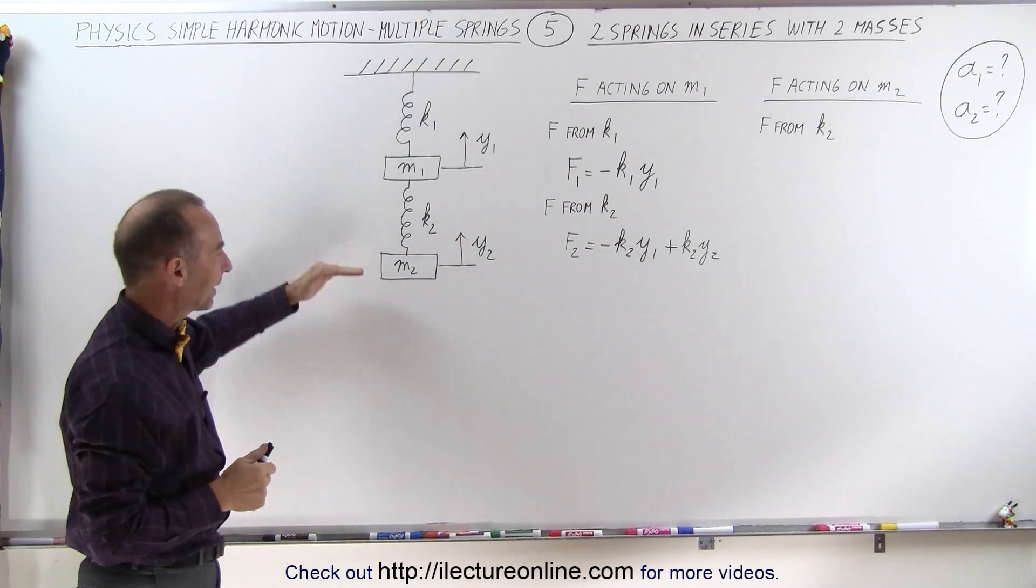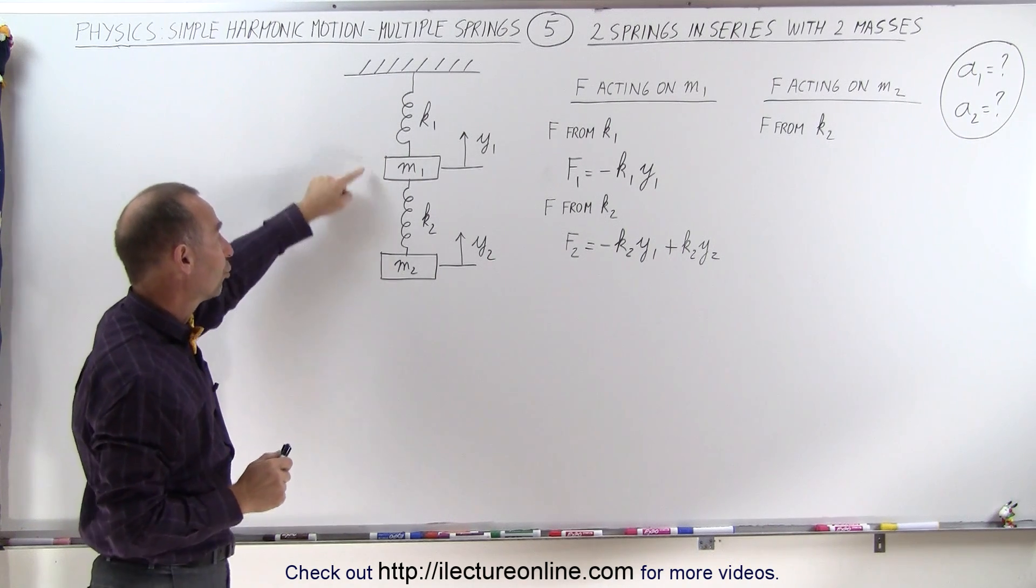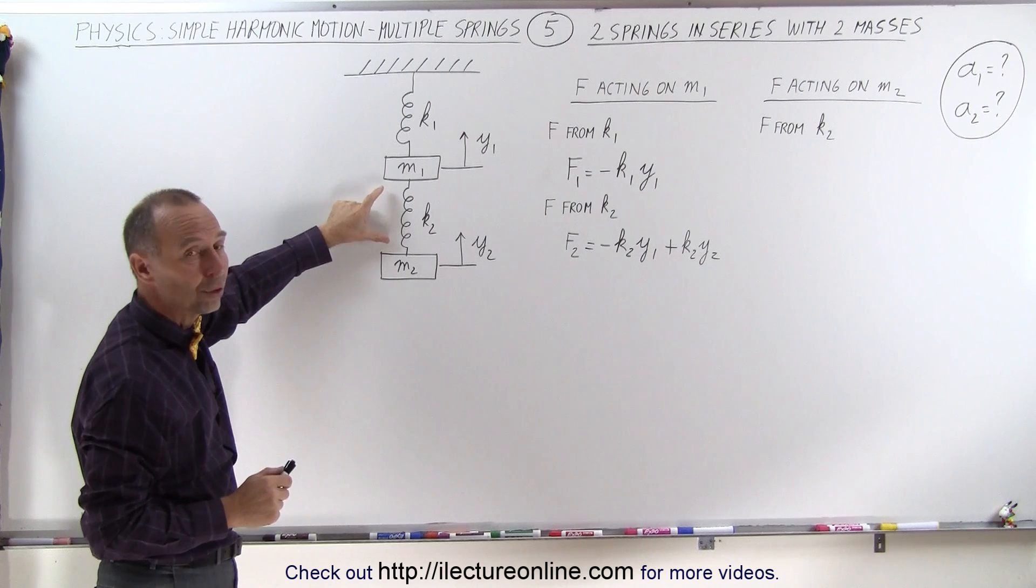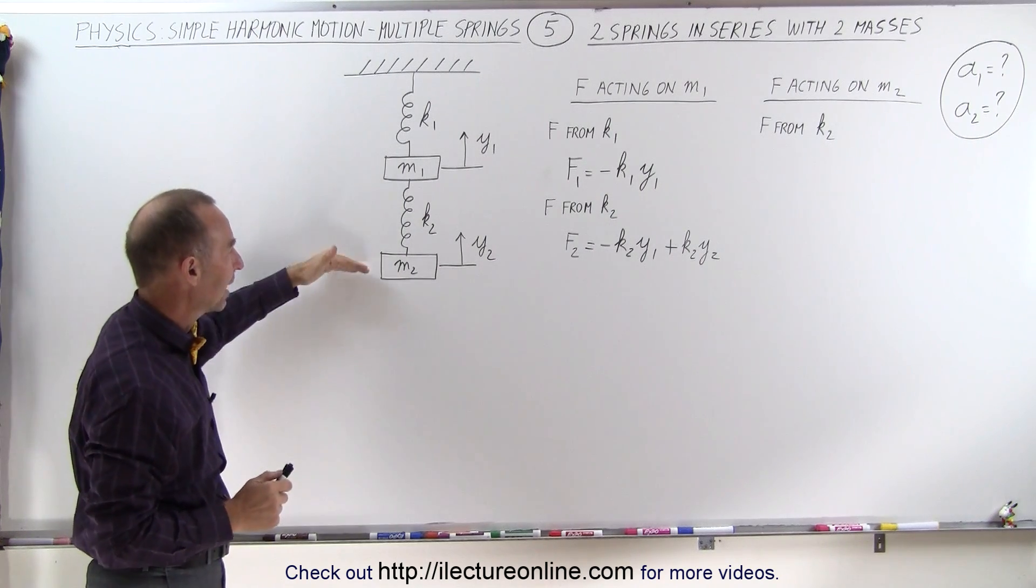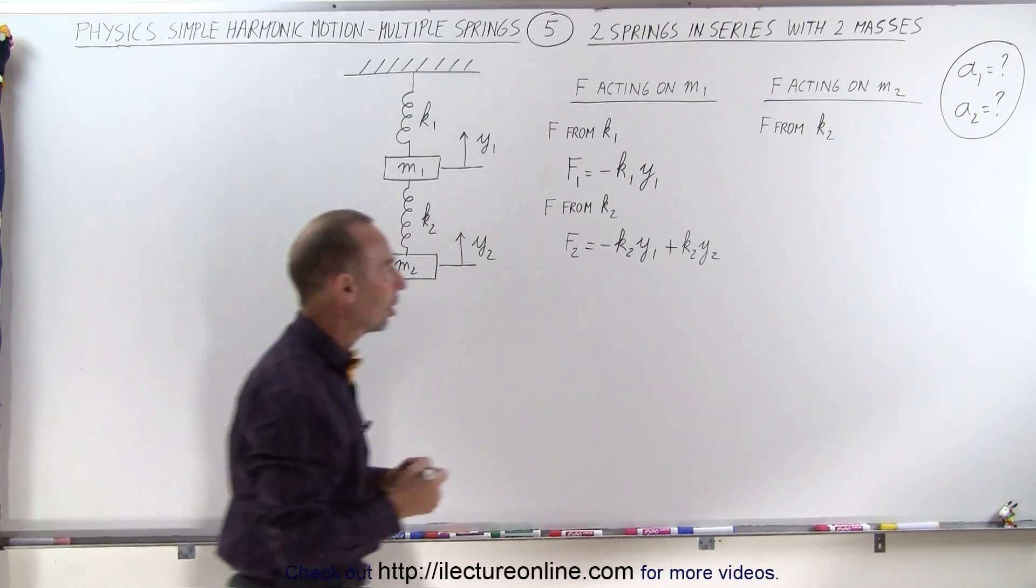What about the force acting on m2? Now in this case, there's only one spring, but there's two masses that cause spring k2 to either lengthen or shorten. So we have to take into account the movement of both masses there as well.